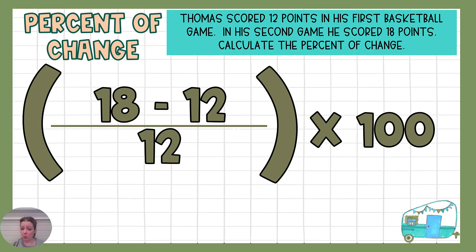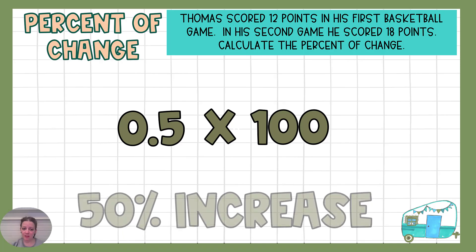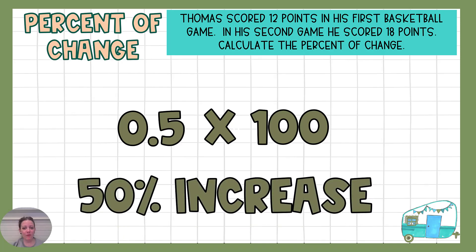Now we work through our problem following order of operations. We do 18 minus 12, which is 6, and then we have our 12. We can do 6 divided by 12, which is 0.5. Multiply that by 100 and we get a 50% increase, because if you go from 12 to 18, that's increasing and that's getting better.